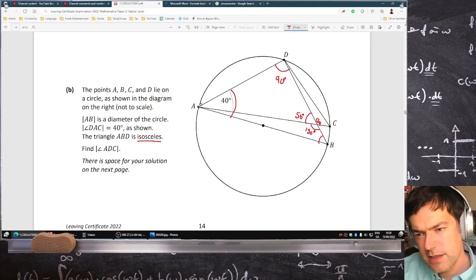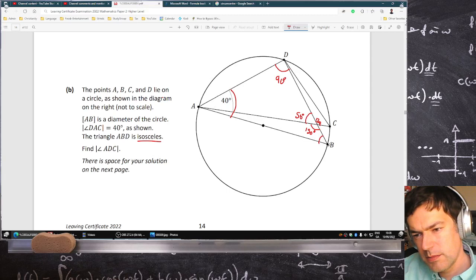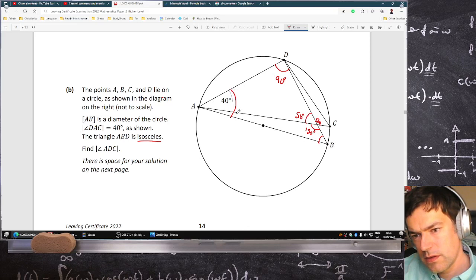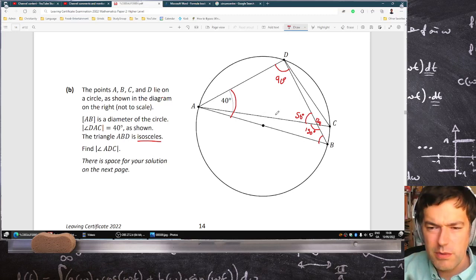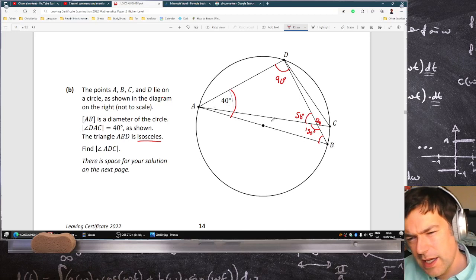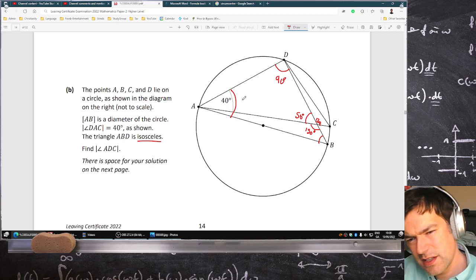ABD is isosceles. And that's the diameter, and that's 90, so that has to be 45.